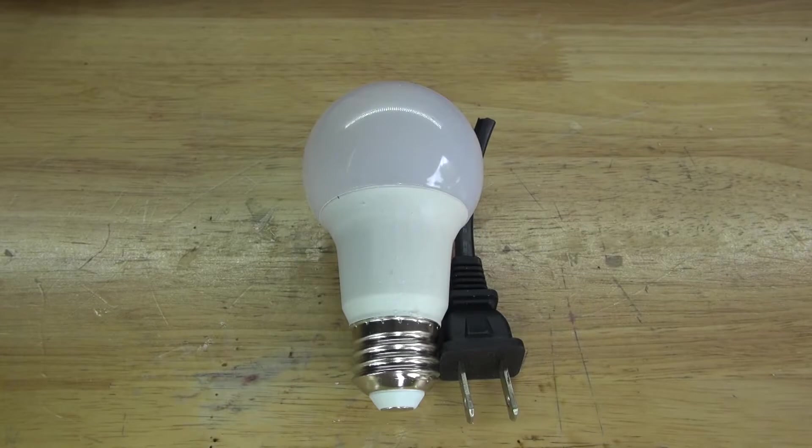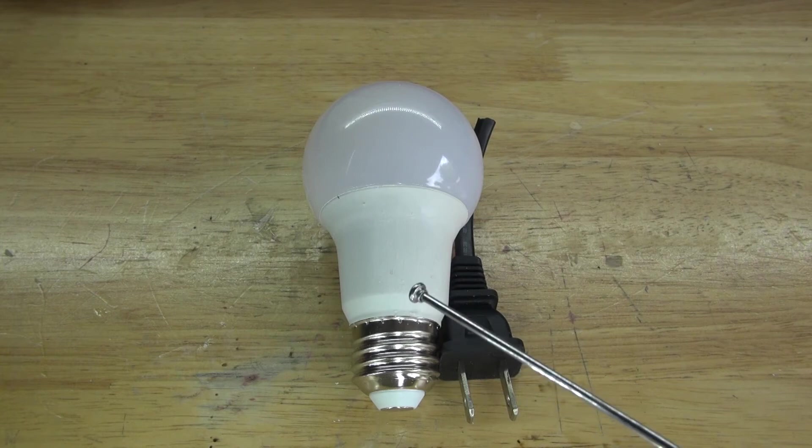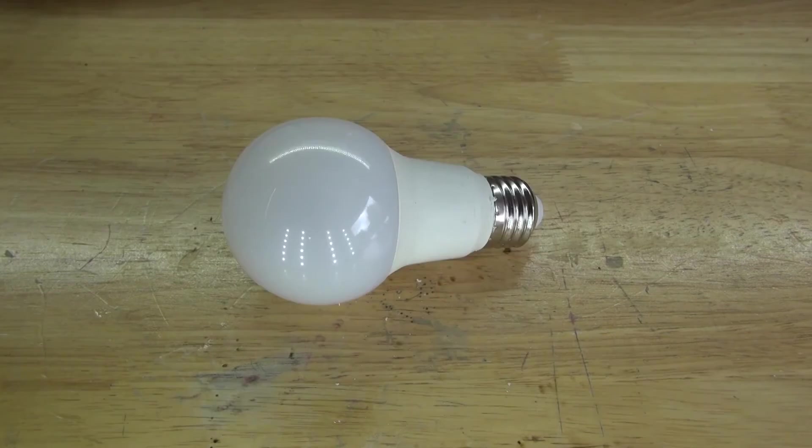And these are the items you're going to need to make for this project. The items you're going to need is an LED light bulb and a power cord. Now let's go and assemble this project and let's get started.